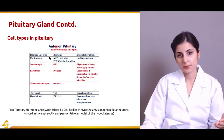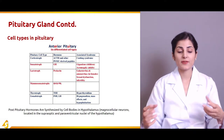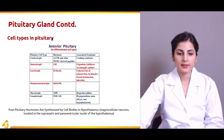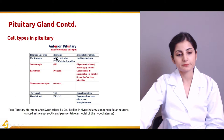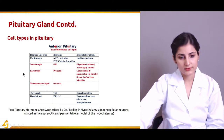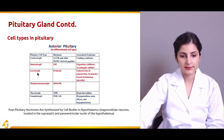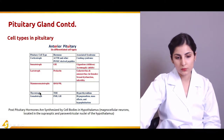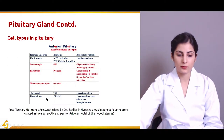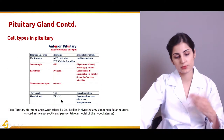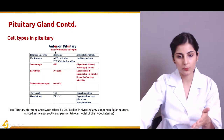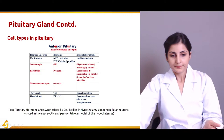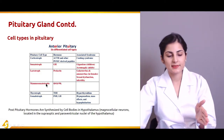Now let us discuss the various cell types present in the anterior pituitary gland, which produce different hormones. Corticotrophs produce adrenocorticotropic hormone (ACTH); somatotrophs produce growth hormone; lactotrophs produce prolactin; mammosomatotrophs produce both growth hormone and prolactin; thyrotrophs produce thyroid-stimulating hormone (TSH); and gonadotrophs produce FSH and LH — follicle-stimulating hormone and luteinizing hormone.